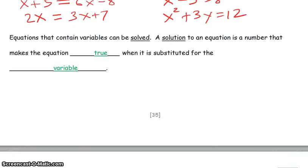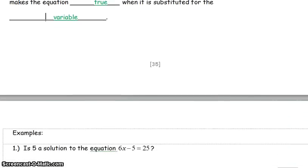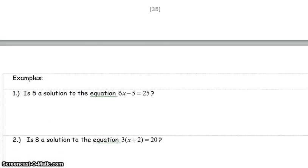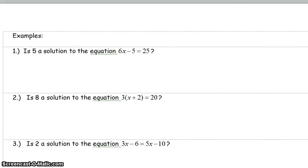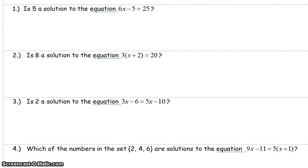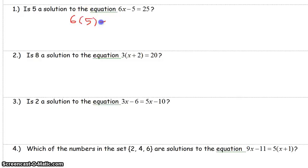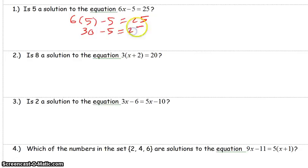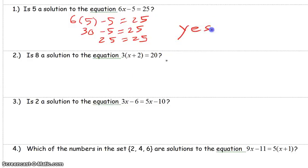Let's look at example 1. Is 5 a solution to the equation 6x minus 5 equals 25? We substitute 5 for x: 6 times 5 is 30, and 30 minus 5 is 25. Since 25 equals 25, the answer is yes.